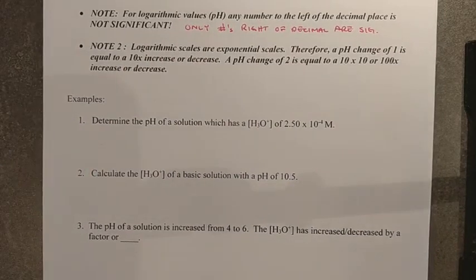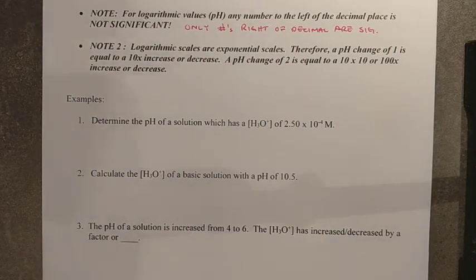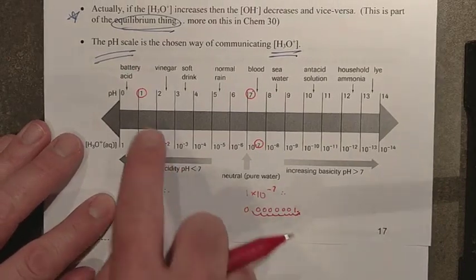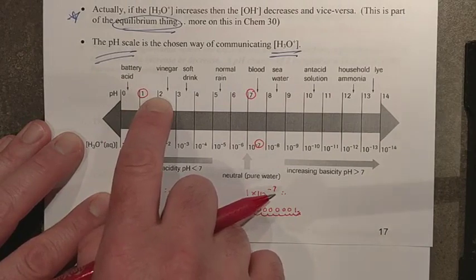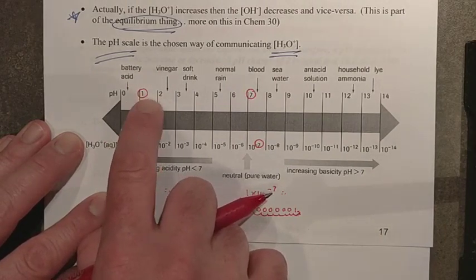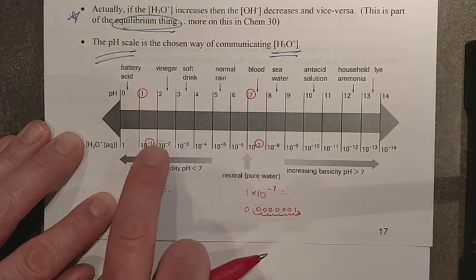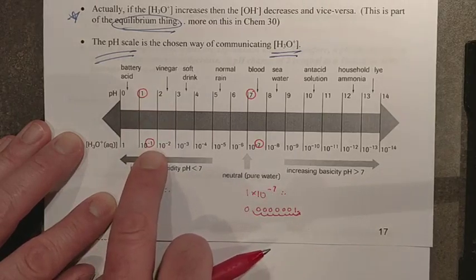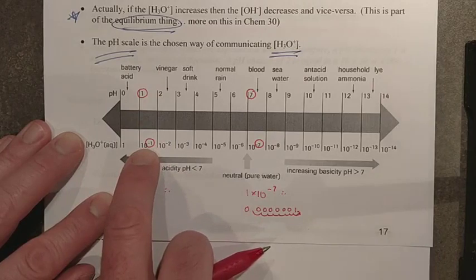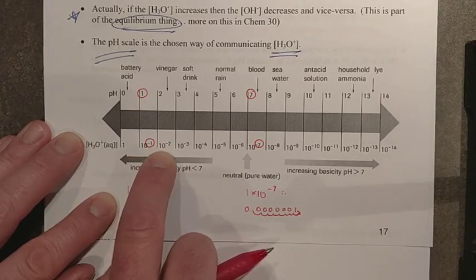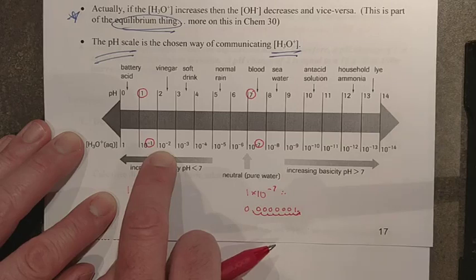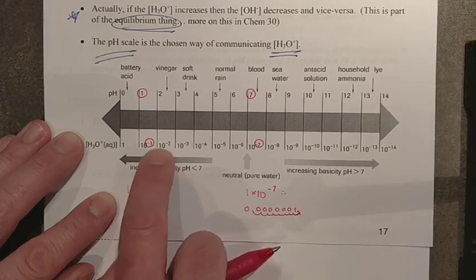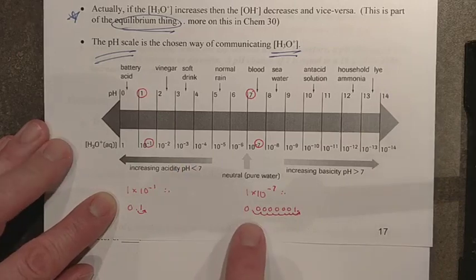On exponential and logarithmic scales, every time you change the number you're changing things by a factor of 10. To go from a pH of 1 to a pH of 2 is a change by a factor of 10 — you are decreasing the amount of hydronium by 10 times. If 10 to the negative 1 is 0.1 and you switch to 10 to the negative 2, that's 0.01 — you had to divide by 10. Each change in your logarithmic scale is a factor of 10 change.